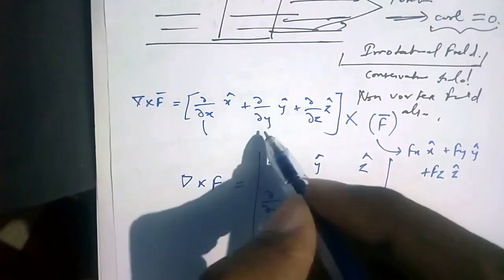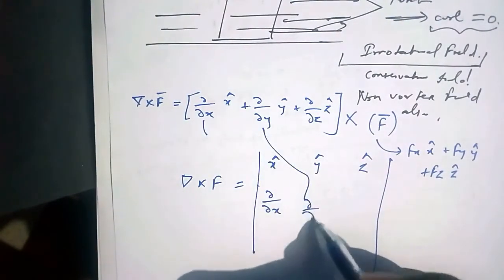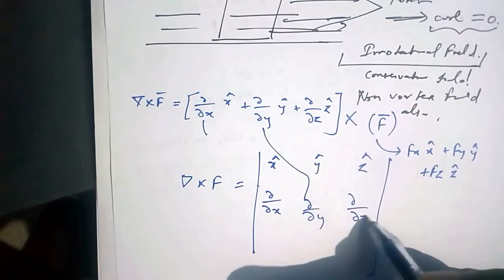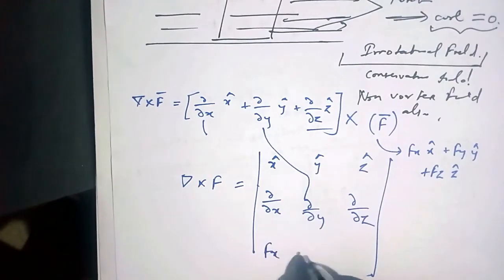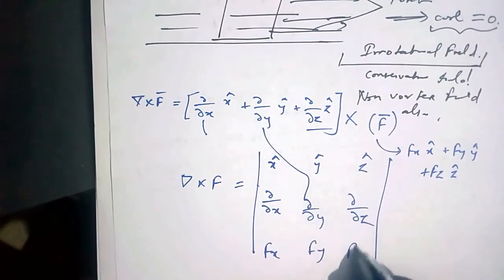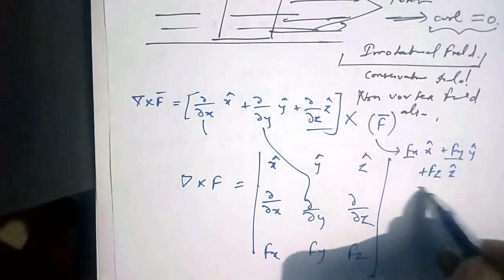And in the last row: Fx, Fy, and Fz. These things.